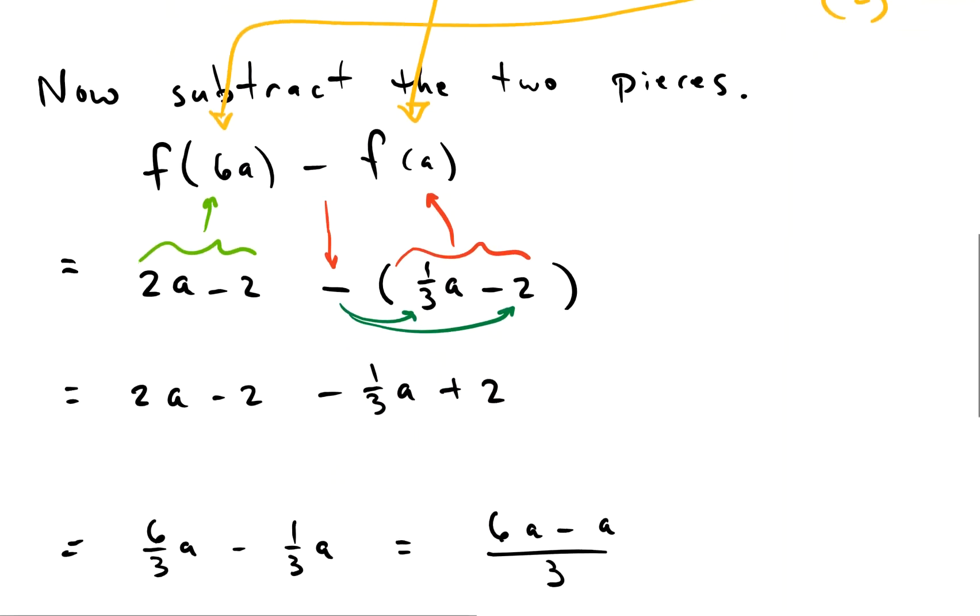And now we're just collecting terms. We can see right away this negative 2 and that positive 2 cancel, and we're left with 2a minus 1/3 a.